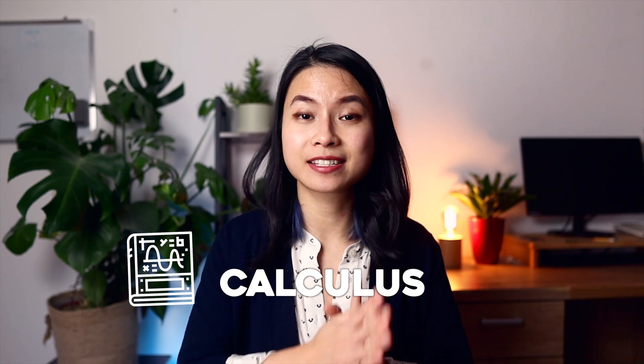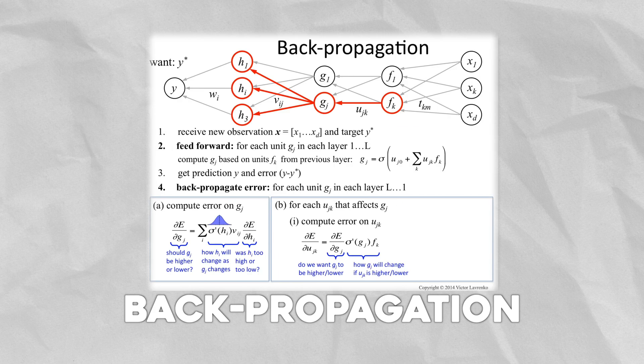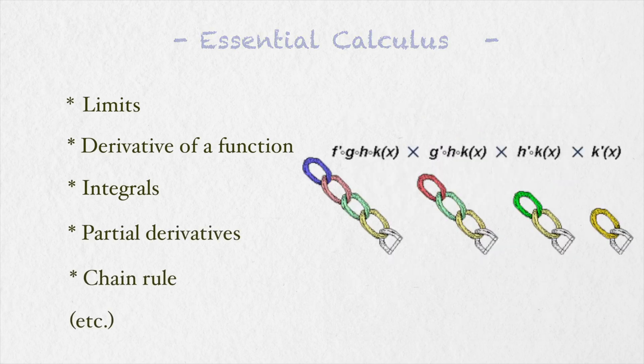The second branch of mathematics extremely useful for data science is calculus — it is the study of continuous change. Whether you loved or hated it in college, calculus pops up in several places, such as ordinary least squares in linear regression and the backpropagation algorithm in neural networks. Important topics include limits, derivatives, integrals, partial derivatives, and the chain rule. The good news is that the calculus needed for data science is usually not super advanced and is often limited to just those concepts.